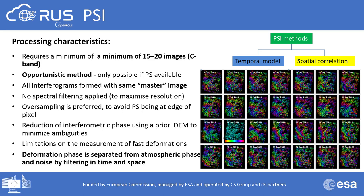In today's exercise, we will use the second approach, implemented in one of the most widely used tools for persistent scatterer interferometry: the STAMPS software developed by Andrew Hooper and others in 2004. They propose a persistent scatterer selection using phase characteristics, suitable for finding low-amplitude natural targets with phase stability that cannot be identified by amplitude-based algorithms.